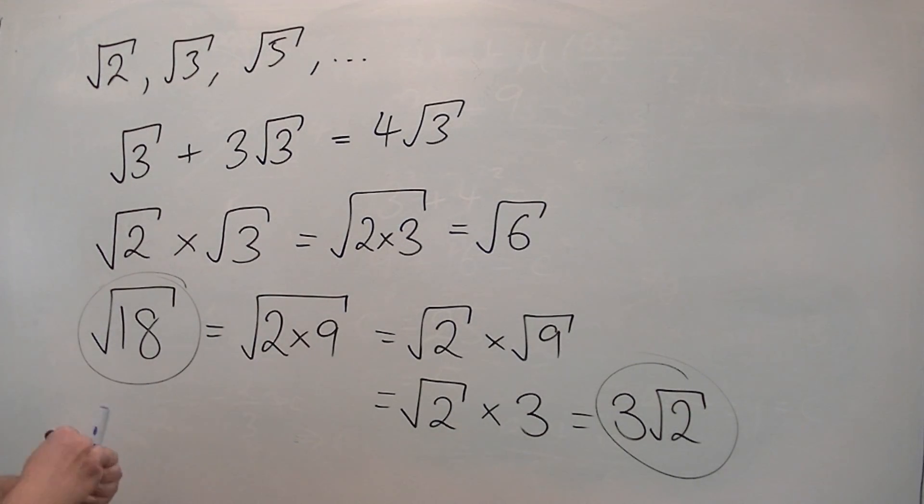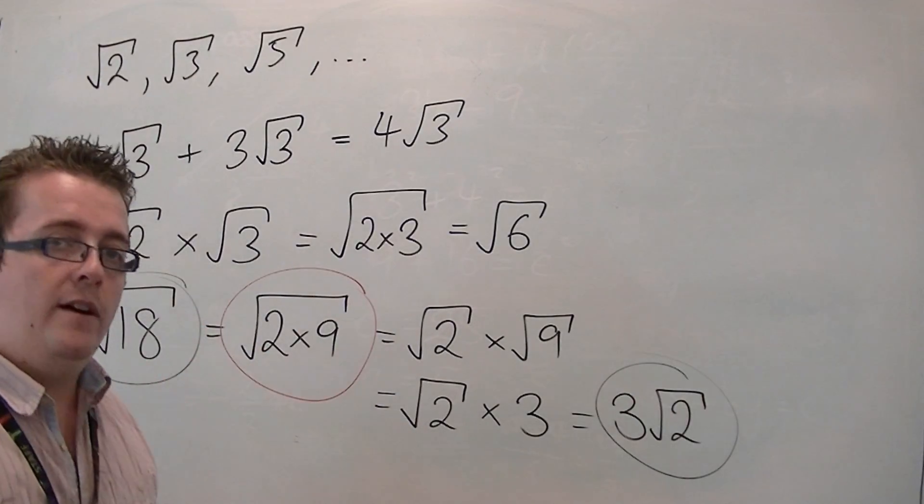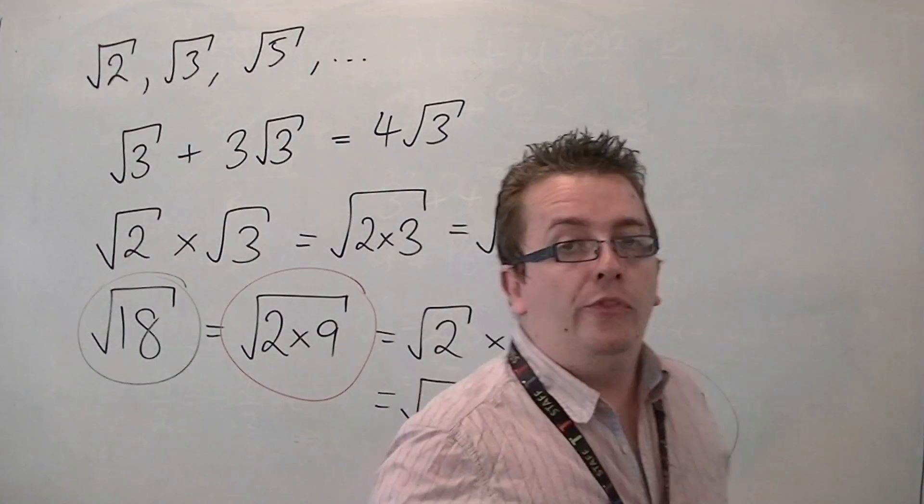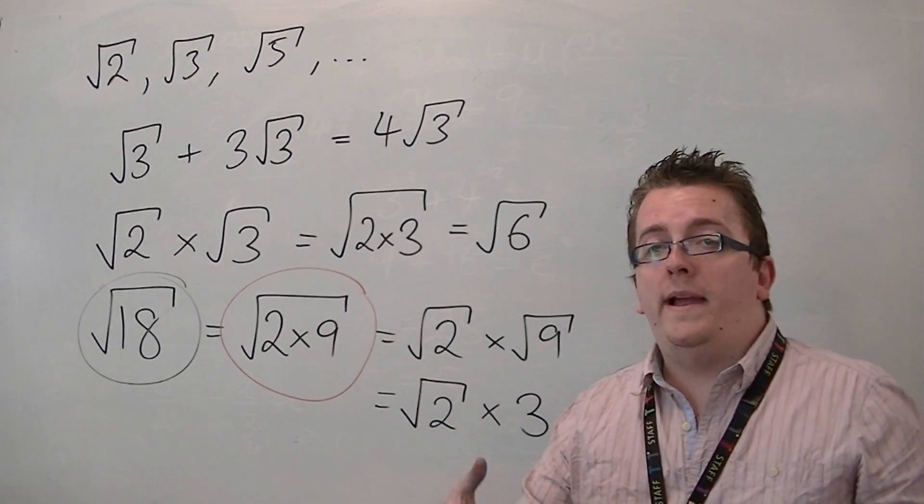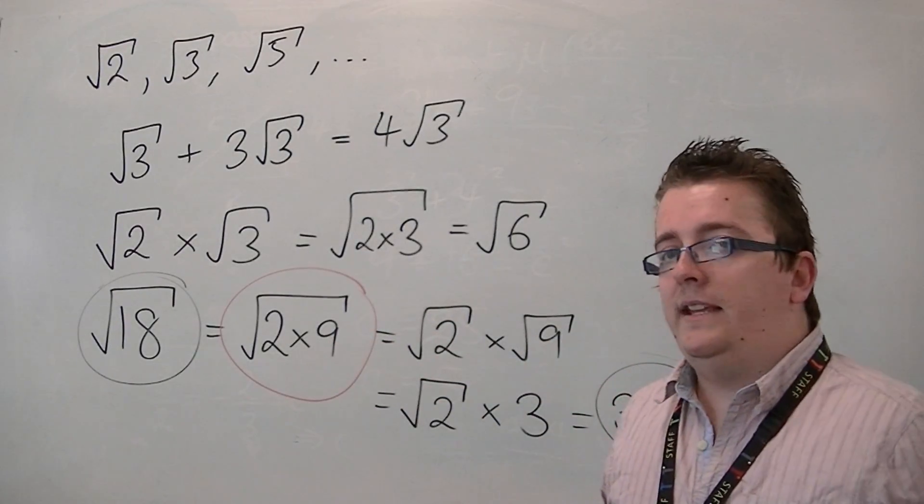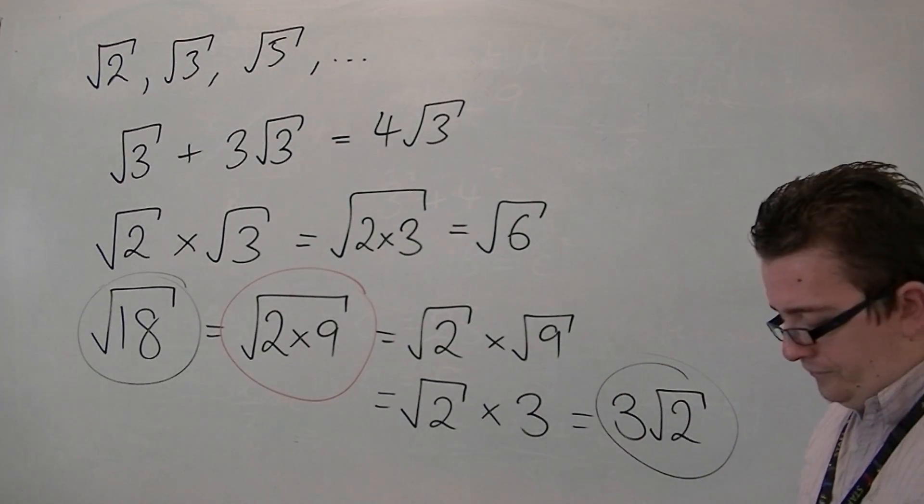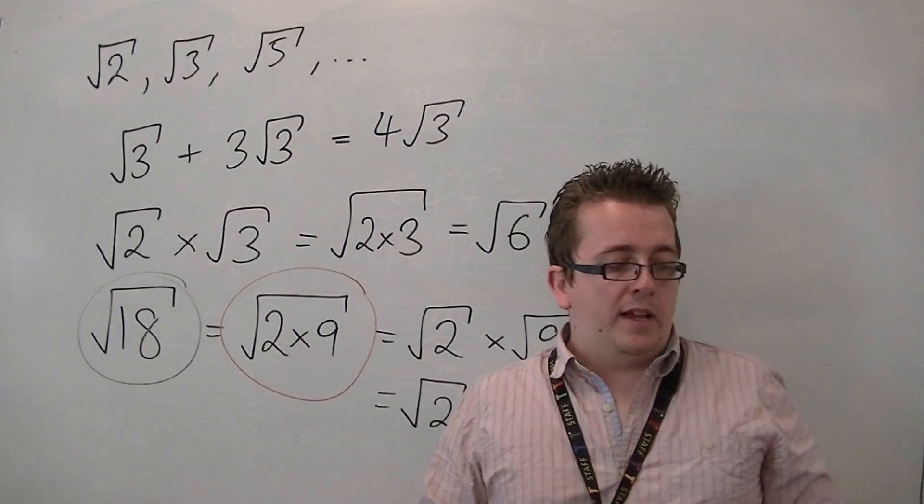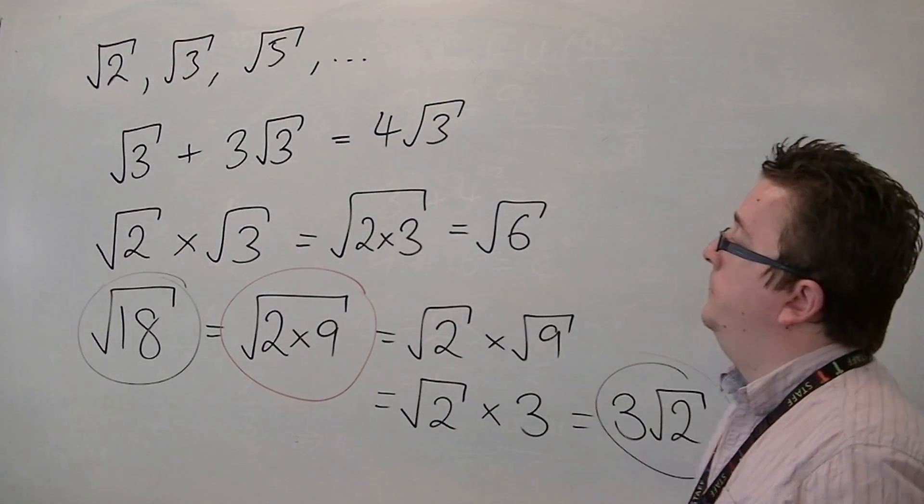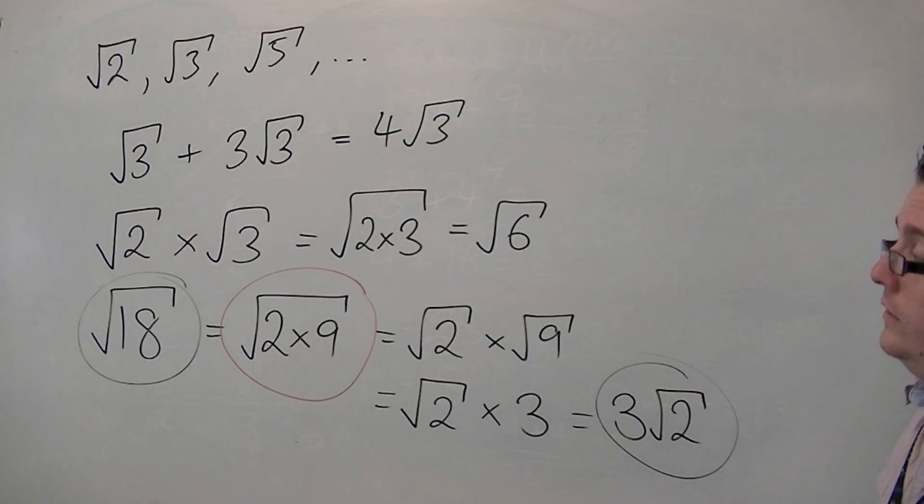So it all hinged on us being able to write the 18 as 2 times 9. And I chose that particularly because I knew that 9 was a square number. And that is the technique that we have to go through into simplifying the surd. So in the next video, we're going to look at this in a bit more detail. But that is the process that you need to get comfortable with.